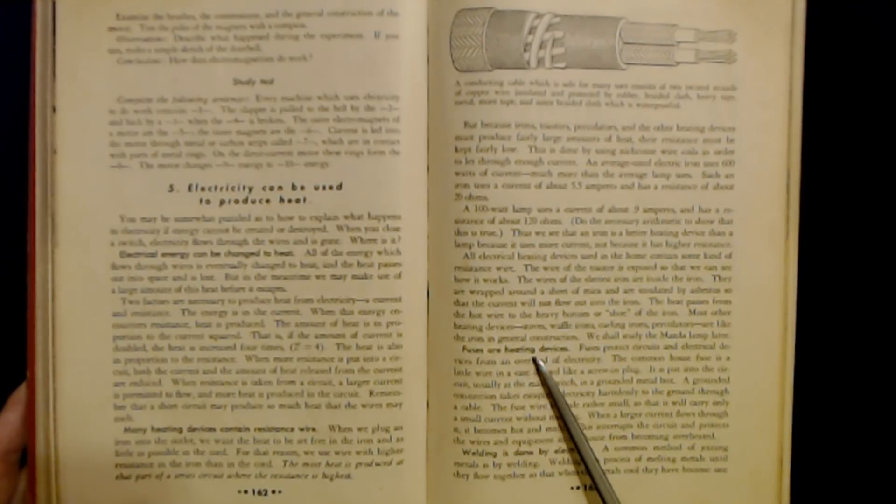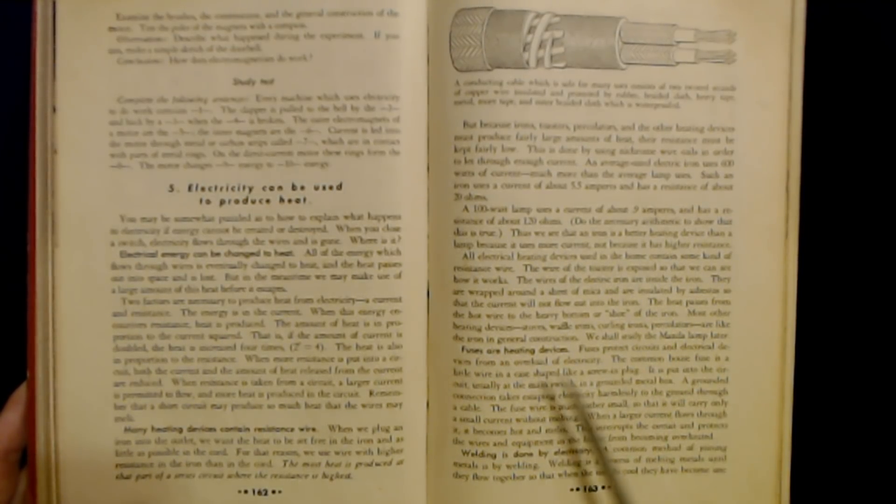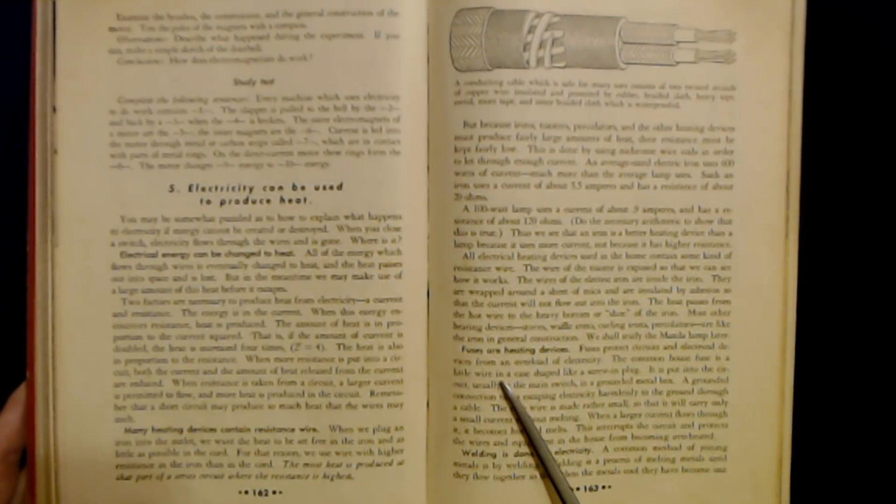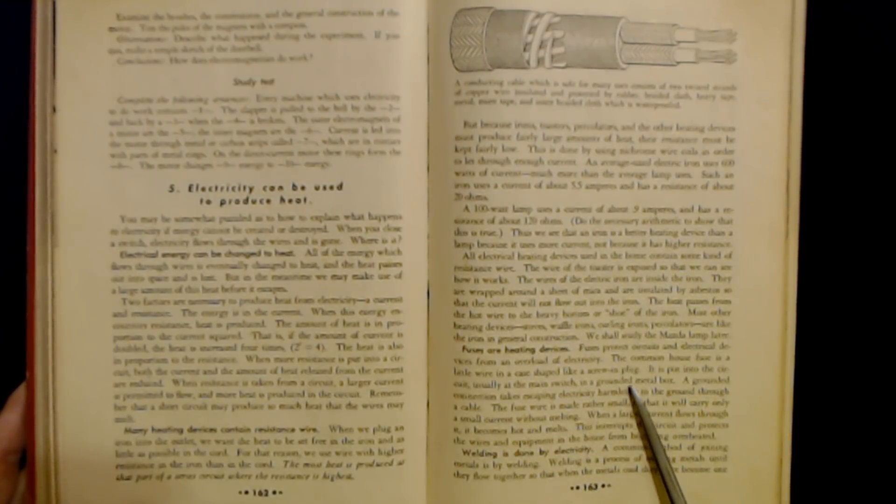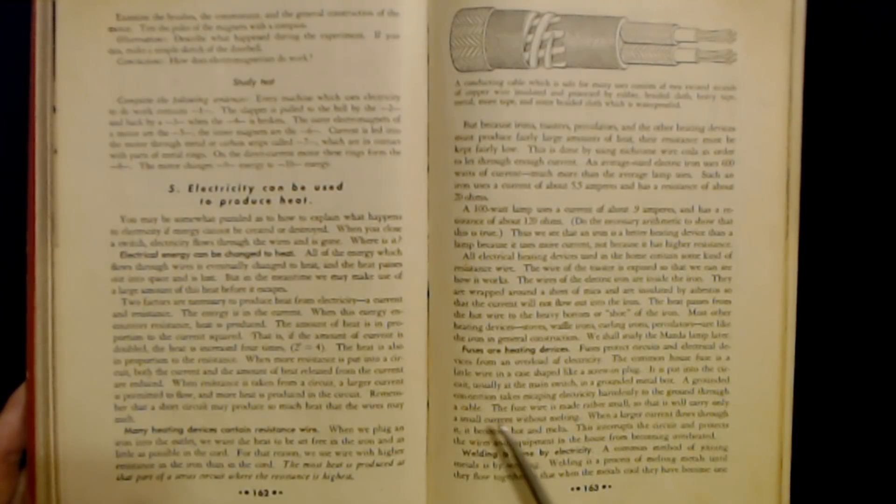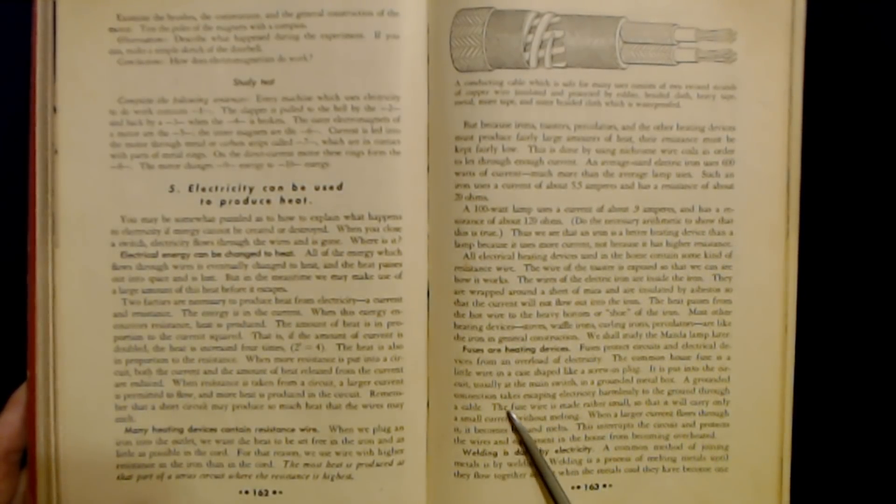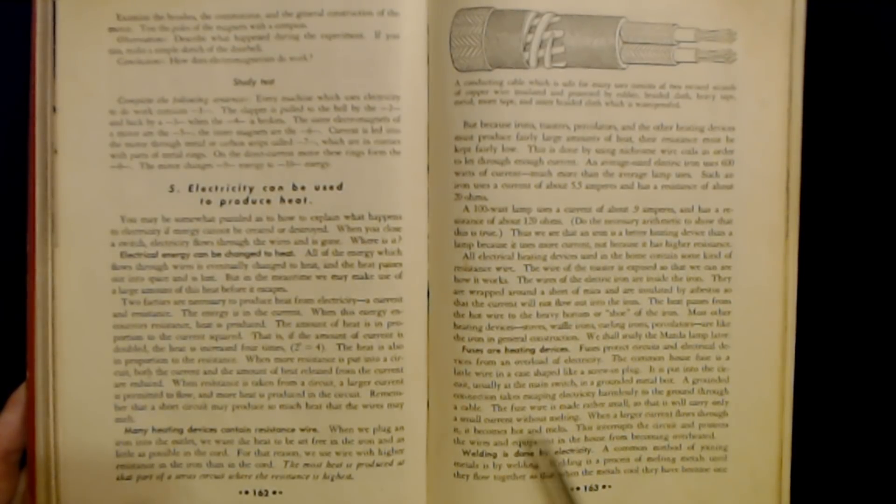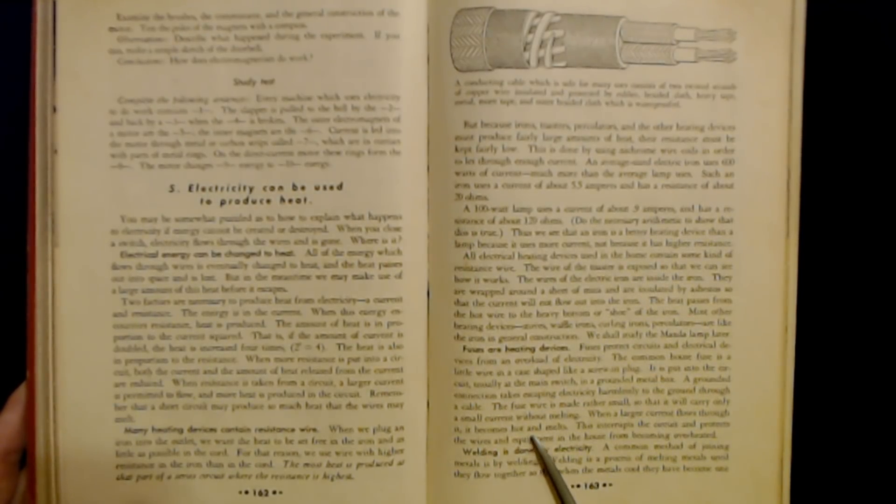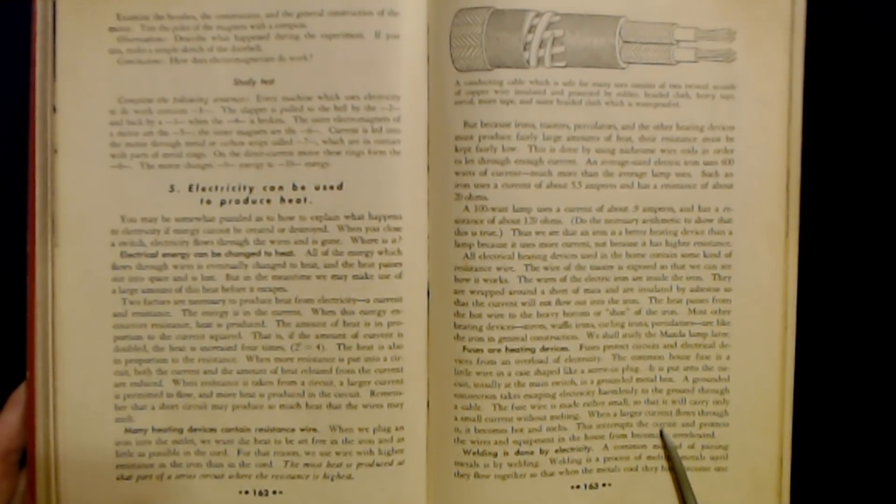Fuses are heating devices. Fuses protect circuits and electrical devices from an overload of electricity. The common house fuse is a little wire in a case shaped like a screw-in plug. It is put into the circuit, usually at the main switch, in a grounded metal box. A grounded connection takes escaping electricity harmlessly to the ground through a cable. The fuse wire is made rather small so that it will carry only a small current without melting. When a larger current flows through it, it becomes hot and melts. This interrupts the circuit and protects the wires and equipment in the house from becoming overheated.